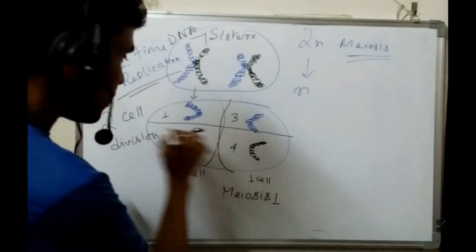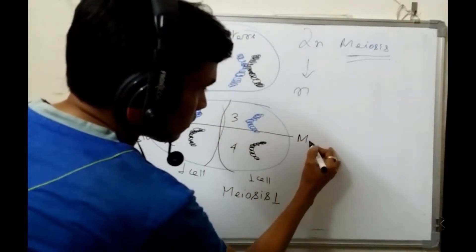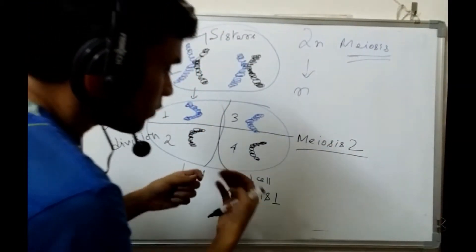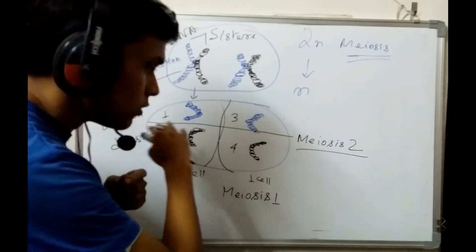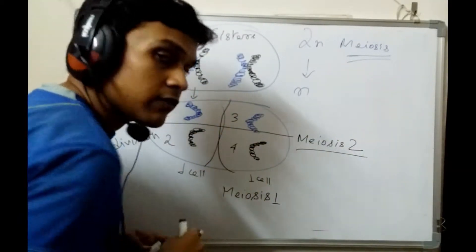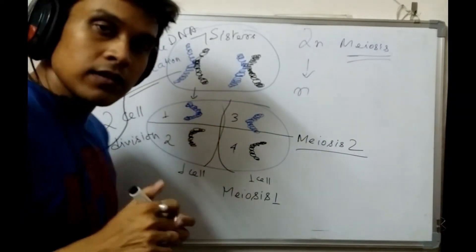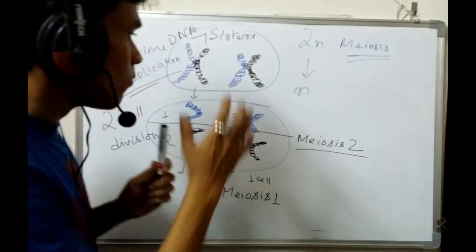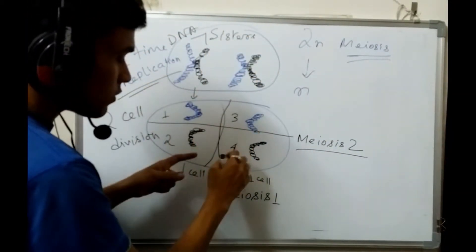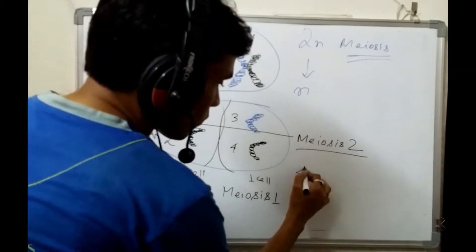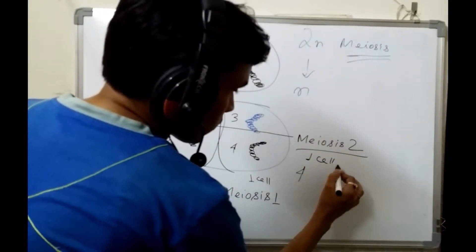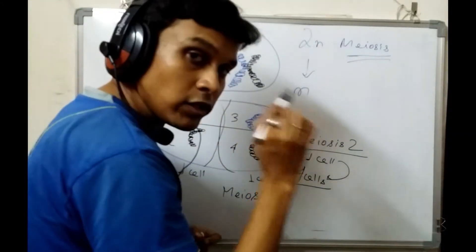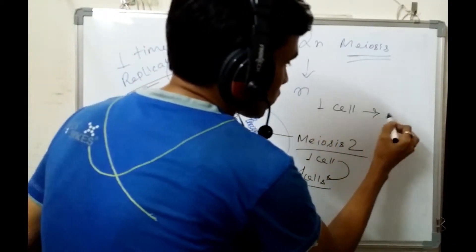When the second division occurs, it is called meiosis two. In meiosis one, the first cell division occurs; in meiosis two, the second cell division occurs without replicating the chromosomes again. That is why the chromosome number goes from 2N to N, and from one cell, four cells are produced — whereas in mitotic division, one cell produces only two cells.